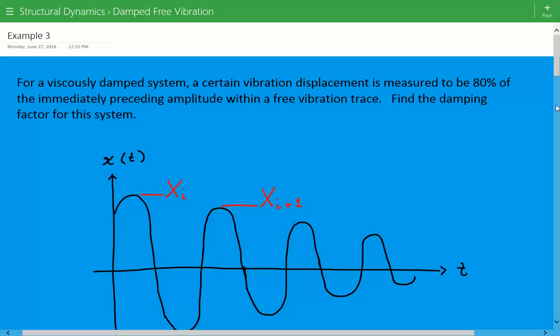Hey everybody, this is example number three for structural dynamics for damped free vibrations. The problem statement that we have is for a viscously damped system, a certain vibration displacement is measured to be 80% of the immediately preceding amplitude within a free vibration trace, and we're asked to find the damping factor for this system.